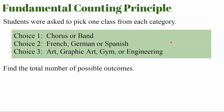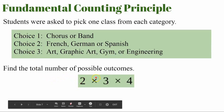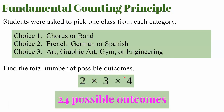Fundamental counting principle. Students are asked to pick one class from each category — three choices: choir or band for choice one, foreign language for choice two, and related arts for choice three. Find the total number of possible outcomes using the fundamental counting principle. Go ahead and pause the video; hit play when you're ready. The fundamental counting principle says to multiply all the possible outcomes from each event: two times three times four equals 24 possible outcomes. So there are 24 different possible choices students can make from these three classes.